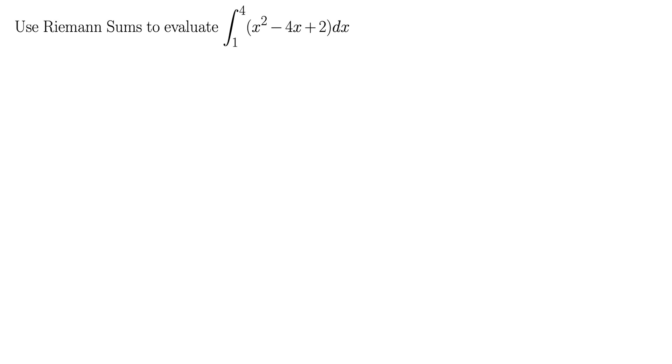In this example, we want to use Riemann sums to evaluate the integral from 1 to 4 of x squared minus 4x plus 2 dx. This is going to be non-trivial, let's get to it.